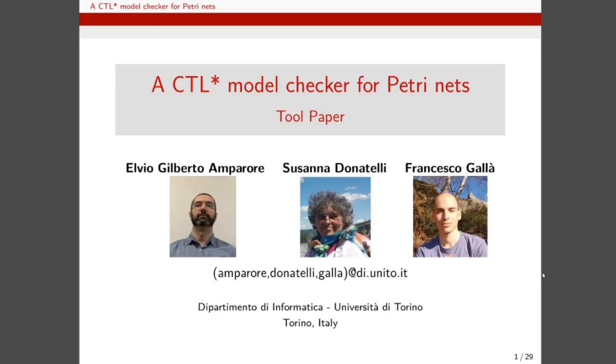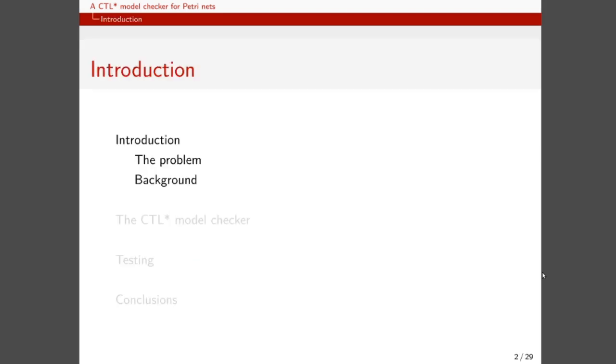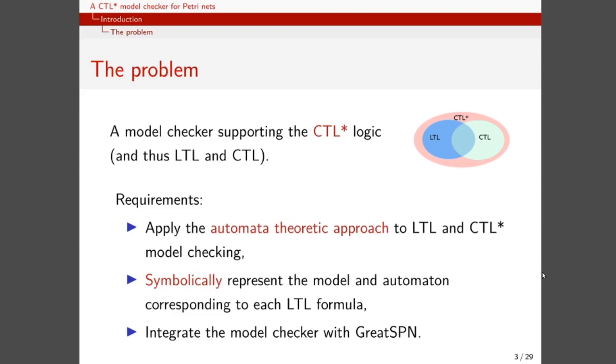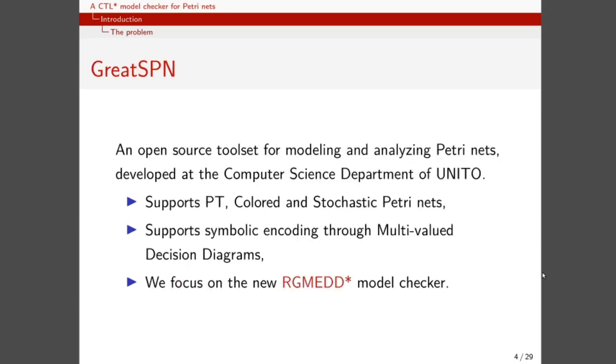Good afternoon everyone, my name is Francesco Gallà and I'll be presenting this tool paper on behalf of the research team composed of Elvio Amparore, Susanna Donatelli and me. The tool we are going to talk about is a model checker which supports LTL, CTL and CTL-STAR temporal logics. It does so by converting each LTL proposition to a Büchi automaton and then by using decision diagrams to encode both the Petri net model and the automata generated in this fashion. This model checker is integrated with the GreatSPN Framework, which is an open source toolset for modelling and analysing Petri nets, which is capable of supporting various dialects and to perform reachability analysis using symbolic techniques, again with the help of decision diagrams.